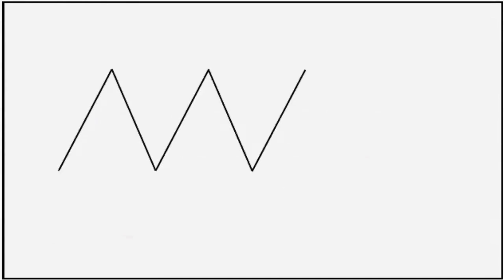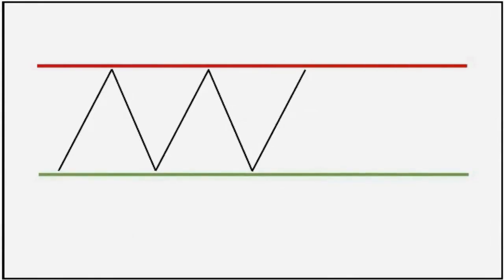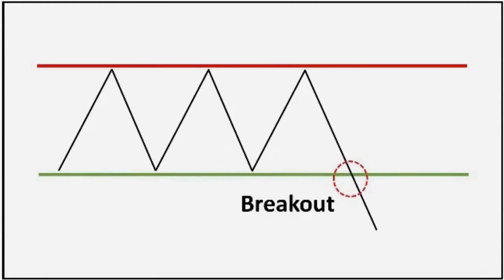Now let us understand the third trap, which is the bear trap. You might have guessed this type of trap is set for the bears — those who short the price. Taking the previous example of a sideways range stuck between a resistance and a support: in a bear trap, the price gives a breakout from the support, as you see on the screen. Of course, if the breakout is given from support it is a sell signal — the price may form a lower high and lower low pattern indicating a downtrend — so most sellers enter and short the price.